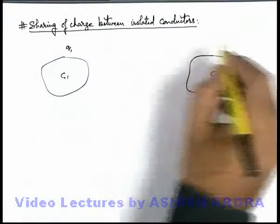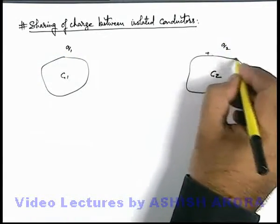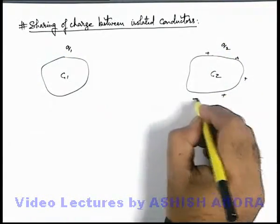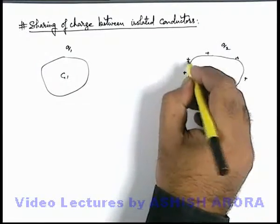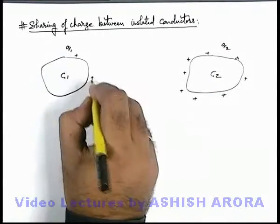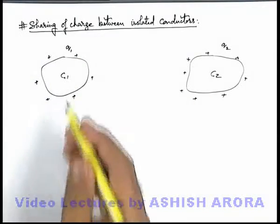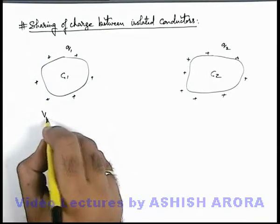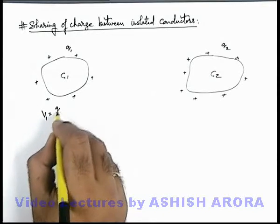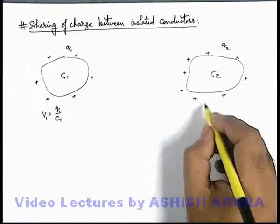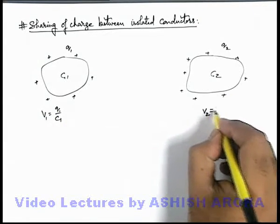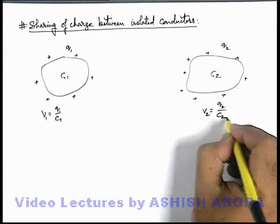If charges q1 and q2 are given to these conductors which are far apart (that's why I have written here isolated conductors), in this situation these are having their individual potentials v1, which can be written as q1 by c1, and the potential of the second conductor will be q2 by c2.